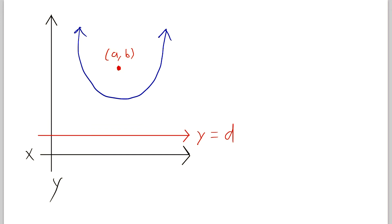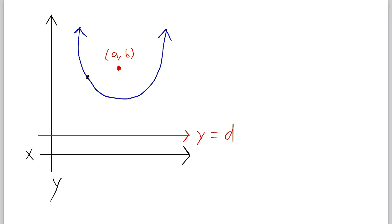We're trying to find an equation that represents all the points on this parabola. So a natural place to start is to take a generic point on the parabola and say that this point is (x, y). Remember, any point on the parabola has the property that its distance to the focus is the same as its distance to the directrix. And that's all the information we need to craft this equation, because since we know these two line segments have to be equal, that's enough to set up an equality and solve for y.